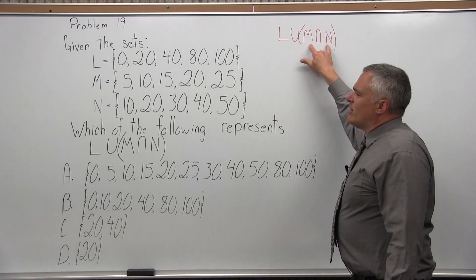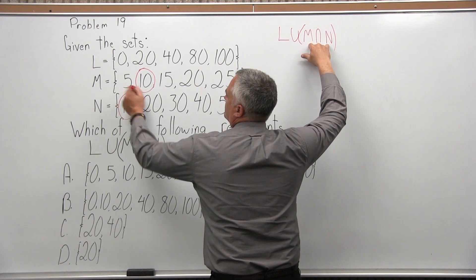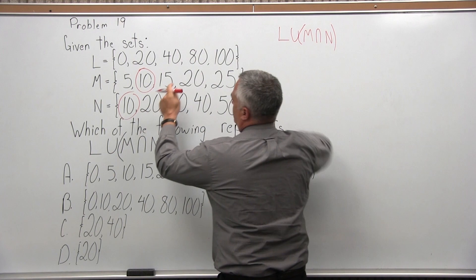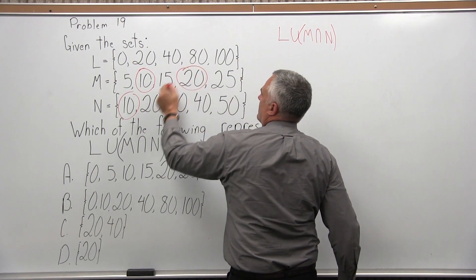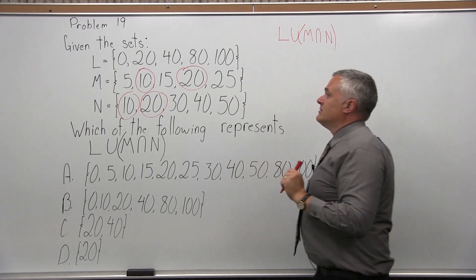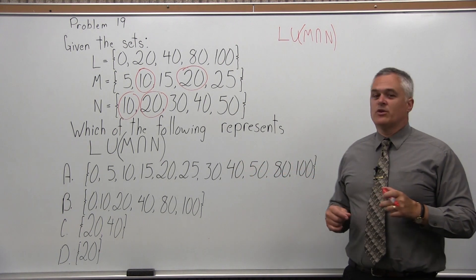So M and N, what's in both M and N at the same time? 10's in both at the same time. 20's in both at the same time. And that's it. So 10 and 20. 10's in both M and N. 20's in both M and N.